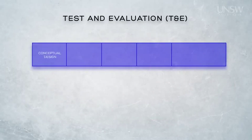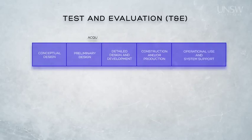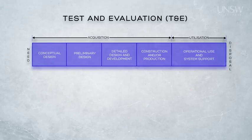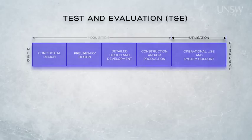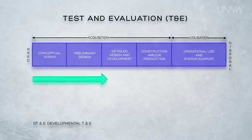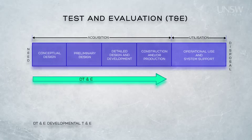Verification and validation is underpinned by a well-managed approach to Test and Evaluation, or T&E, which aims to support delivery of a system that is both verified and validated. There are three major categories of T&E applied to coincide with the activities of the acquisition phase, the transition between acquisition and utilisation phase, and the retirement phase. Developmental Test and Evaluation refers to the T&E activities undertaken during the acquisition phase to support the design and development effort.